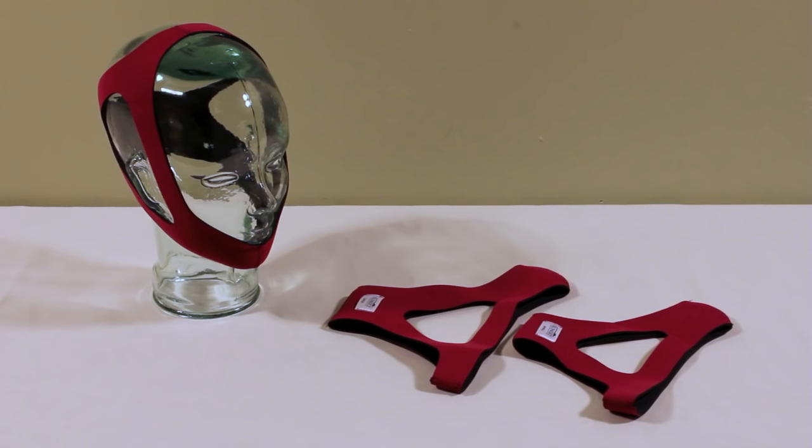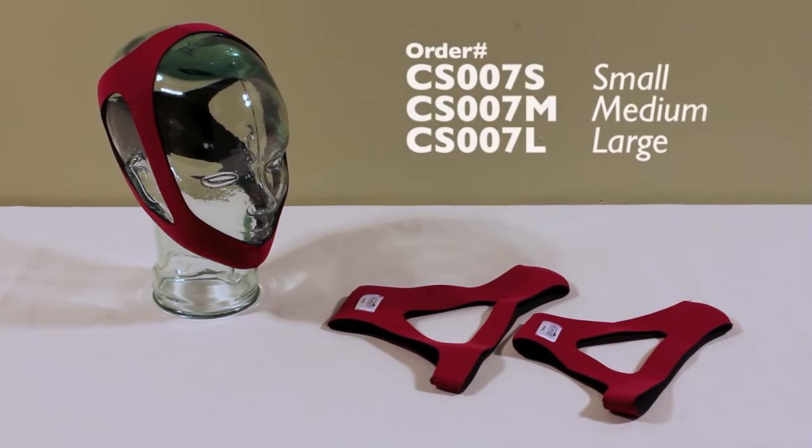The ruby style chin strap is made entirely from one piece of soft latex free neoprene and comes in sizes small, medium and large.